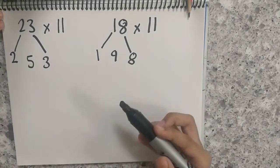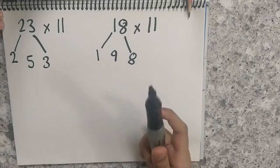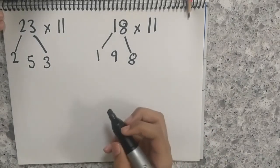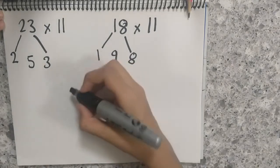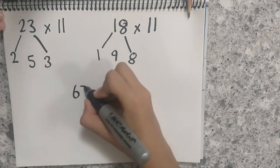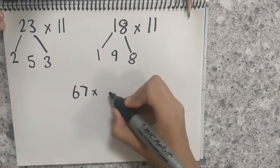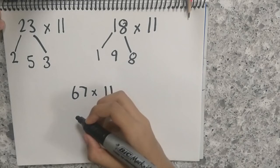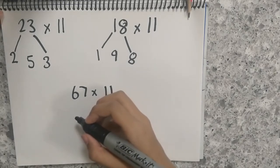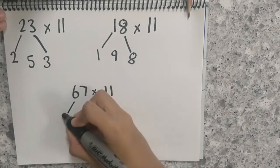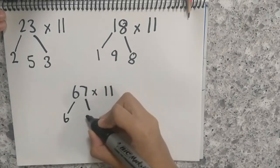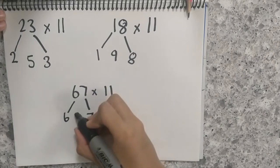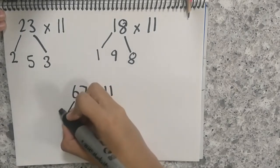And let us take another number. Now something big, and that number can be 67. So 67 into 11 is 737. Now let me tell you how I got that. The 6 goes here, the 7 goes here, 6 plus 7 is 13. So 3 goes here with a carry over of 1.